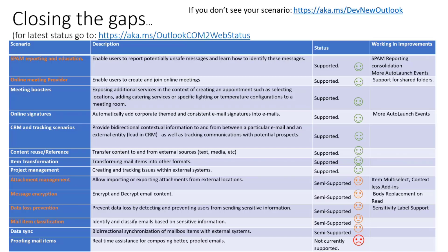We also have DLP — data loss prevention — solutions that require access to sensitivity labels and many other features. That information is going to be live on the status page. There are some scenarios we could not support today in the way we would love, like proofing emails — providing information or assistance while the user is typing a message. This will be super complex to support; however, it's also in the backlog, so eventually we will have this type of functionality.